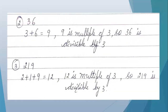Next example is 36. We add the digits: 3 plus 6 equals 9. Here 9 is a multiple of 3 — 3 threes are 9. So the whole number 36 is divisible by 3. For the given number, if we add all the digits and the answer is a multiple of 3, then the whole number is divisible by 3.